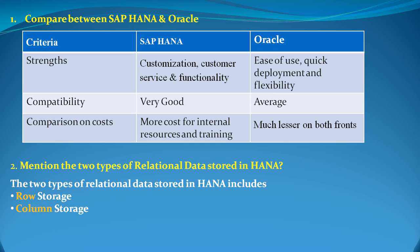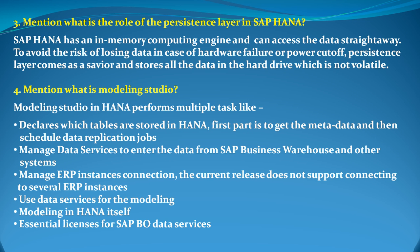The next question is: what are the two types of relational data stored in SAP HANA? We have two types — row storage and column storage. They have two different functionalities and are useful in their own different ways. SAP HANA has newly brought in column storage, which is functioning at an extraordinary level, but row storage is still important.